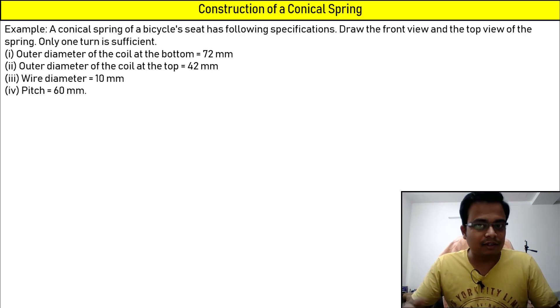So let's see how it goes. Here we go: a conical spring of a bicycle seat has the following specifications. Draw the front view and top view of the spring. Only one turn is sufficient.